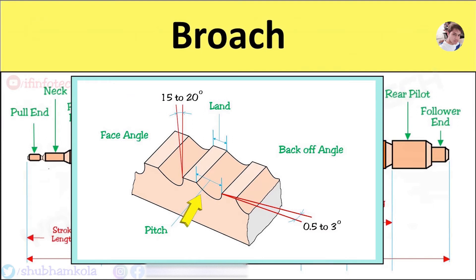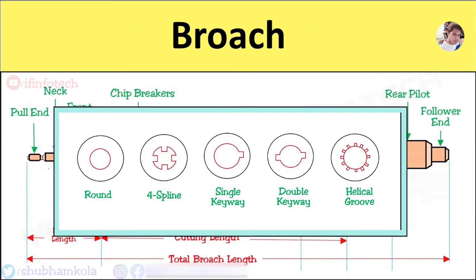Next is pitch, which is the distance between the same point on two successive teeth. Here are some profiles which can be produced by the broaching process.